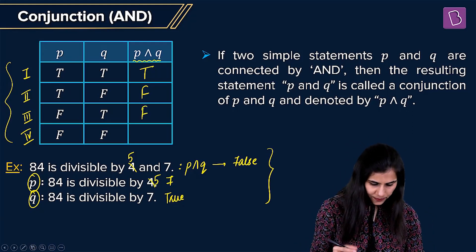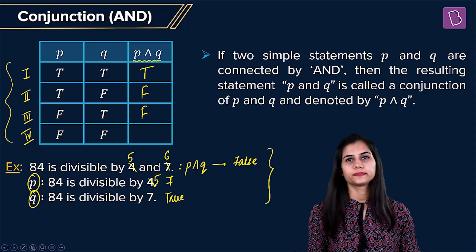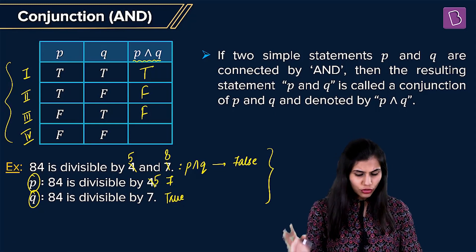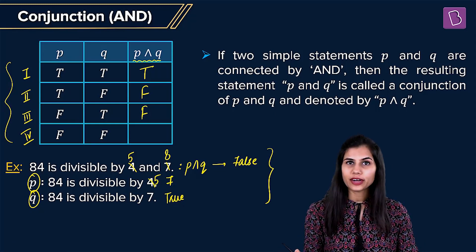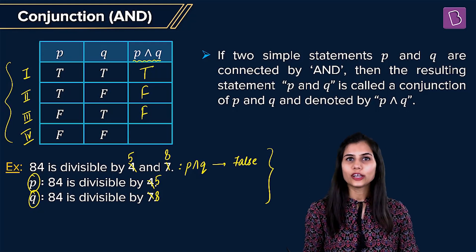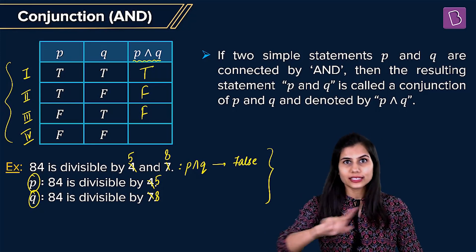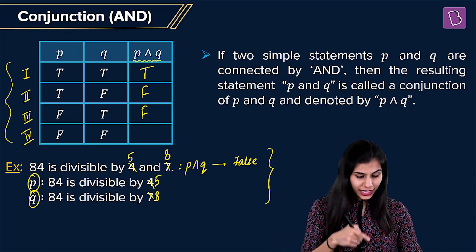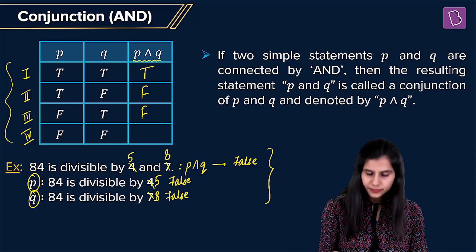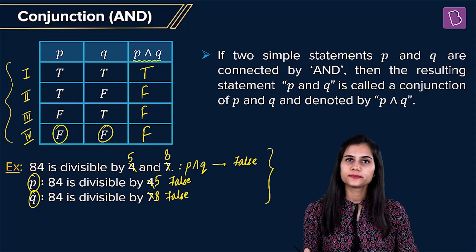And let's say we have 5 and 8. You know that 84 is not divisible by 5 and 84 is not divisible by 8. So '84 is divisible by both 5 and 8' is entirely false. For individual statements: '84 is divisible by 5' is false, and '84 is divisible by 8' is also false. Conclusion: P false, Q false implies P ∧ Q is also false.